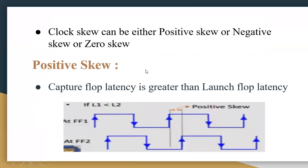Clock skew can be positive, negative, or zero. Positive skew is nothing but when the capture flip-flop latency L2 is greater than the launch flip-flop latency L1. At FF1 we get one clock arrival, and at FF2 we get another. When L2 is greater than L1, that is positive skew.